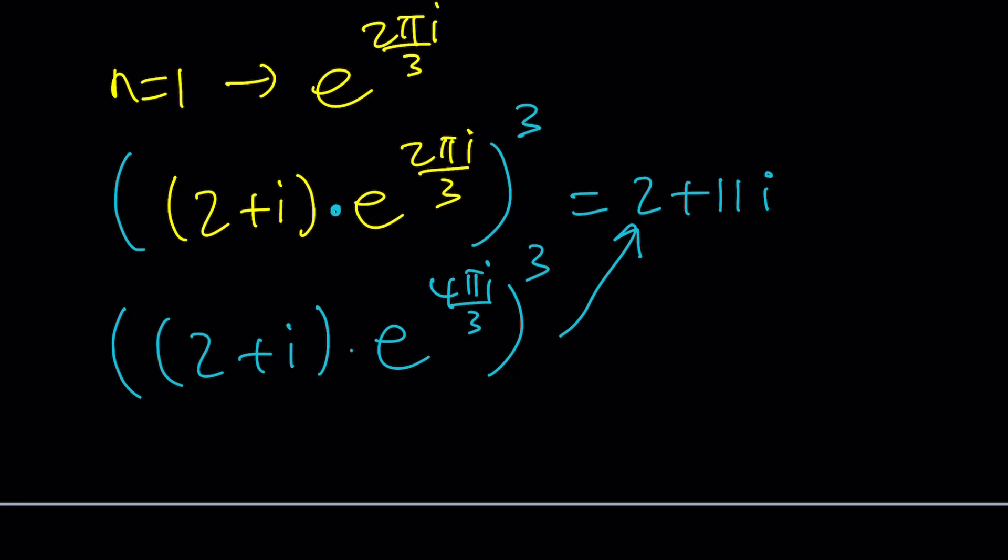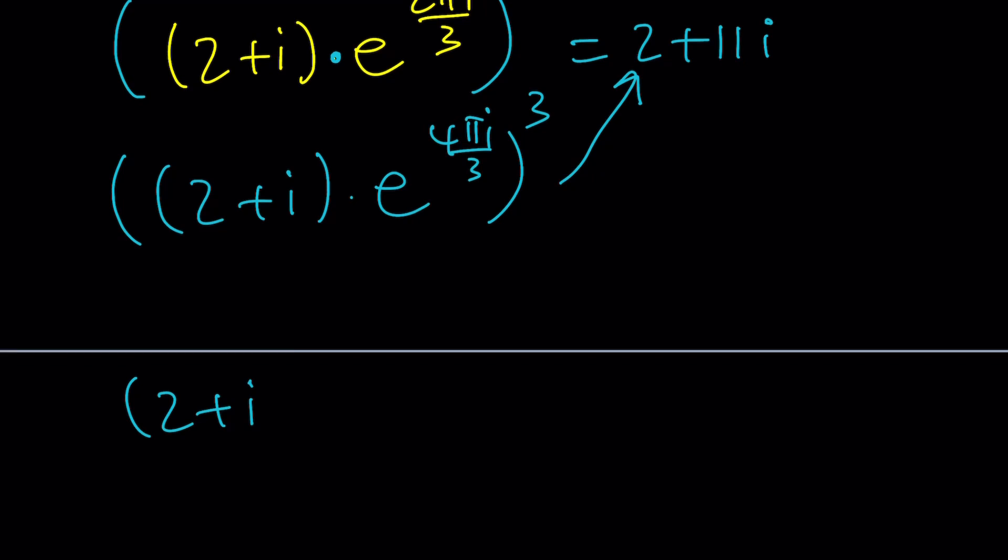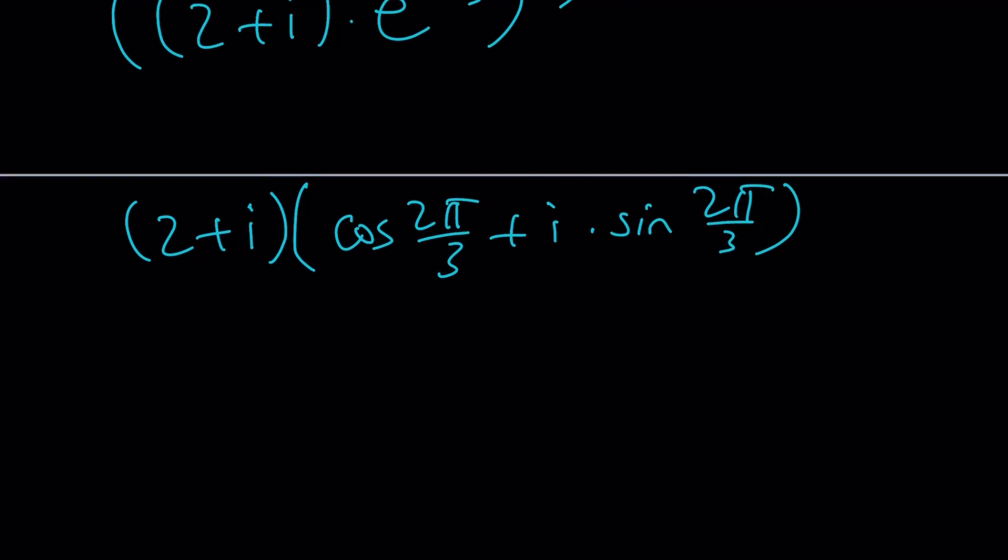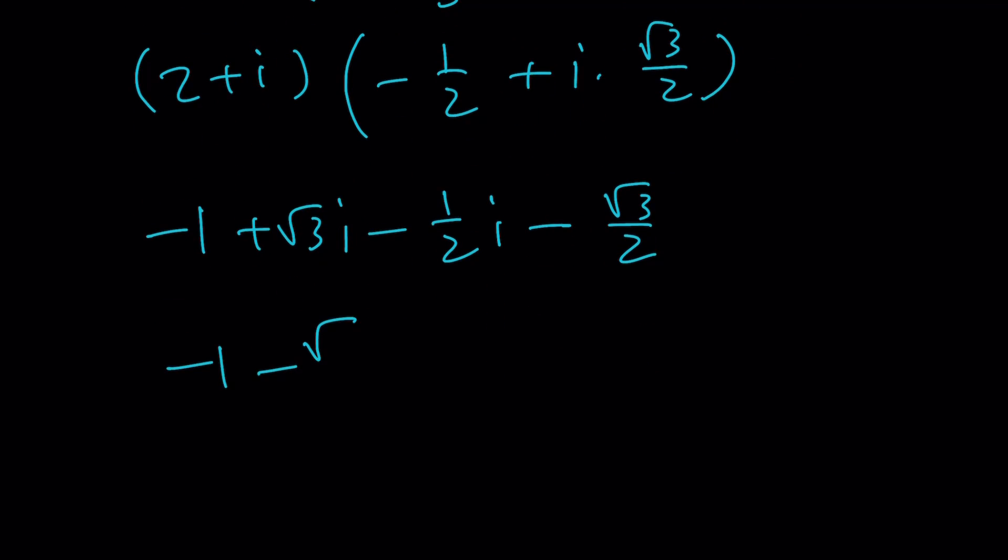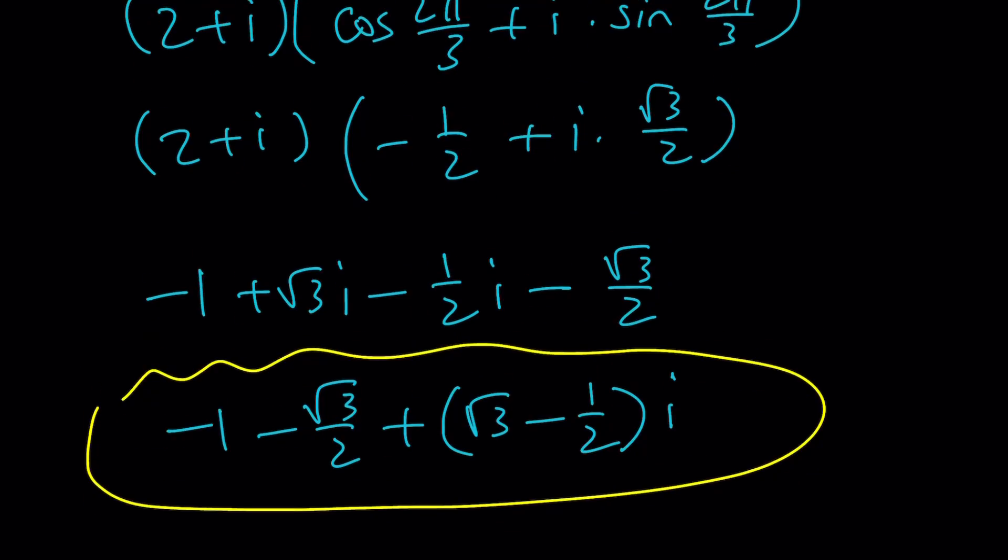So you can go ahead and simplify it. Let me show you how you can do it. Think about this: You can write this as cosine of 2 pi over 3 plus i times sine of 2 pi over 3. As you know, 2 pi over 3 is 120 degrees. Its cosine is going to be the same as negative cosine 60, which is negative 1 half. So you can go ahead and write this as negative 1 half, and this is just going to be root 3 over 2. And if you distribute these numbers, you're going to get another cube root. It's going to be negative 1, and then we're going to get a root 3 i from here, and then negative 1 half of i minus root 3 over 2. And this is going to give you negative 1 minus root 3 over 2 plus root 3 minus 1 half multiplied by i. And this is just going to be another cube root.